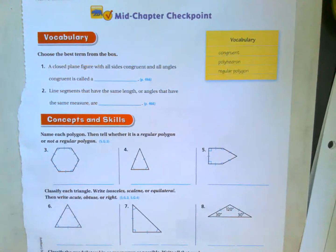A closed plane figure with all sides congruent and all angles congruent is called A, and our options are congruent, which means same, and in our notes.